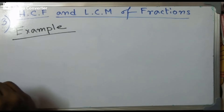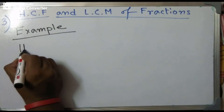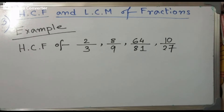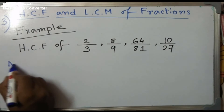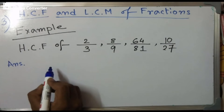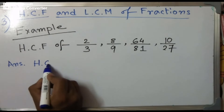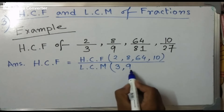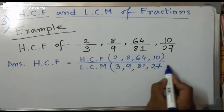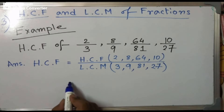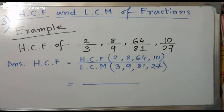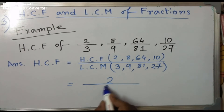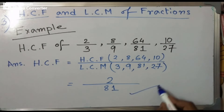Now we practice a few examples. First example: find the HCF of 2/3, 8/9, 64/81, and 10/27. According to the formula, first find the HCF of the numerators — that is 2, 8, 64, and 10. The HCF is 2 because all these numbers are divisible by 2. Then find the LCM of the denominators 3, 9, 81, and 27, which is 81. So the HCF of these fractional values equals 2/81.